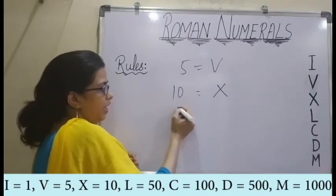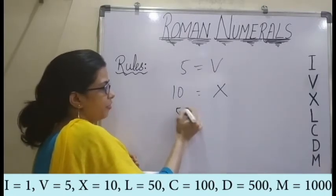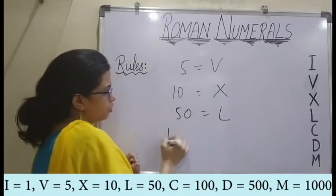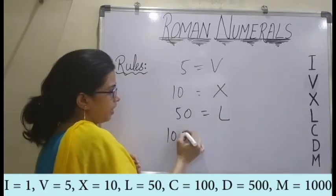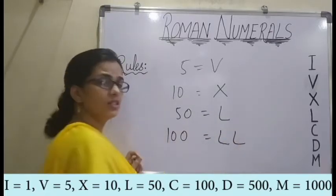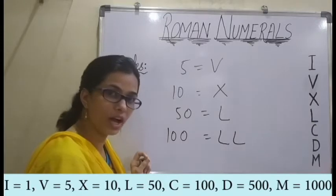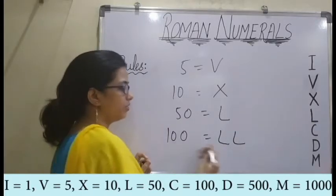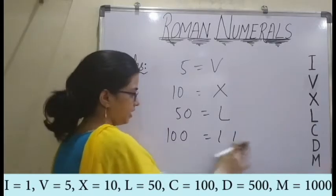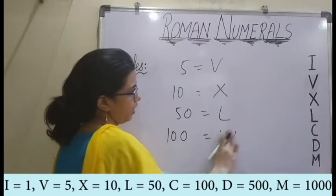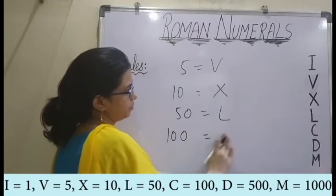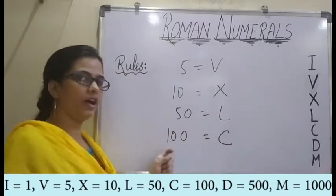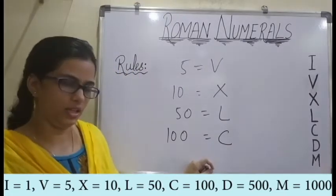Suppose for 50 we have L. So for 100, can I write LL? No, we can't. Because for 100, we already have a symbol which is C. So we can't write LL for 100.